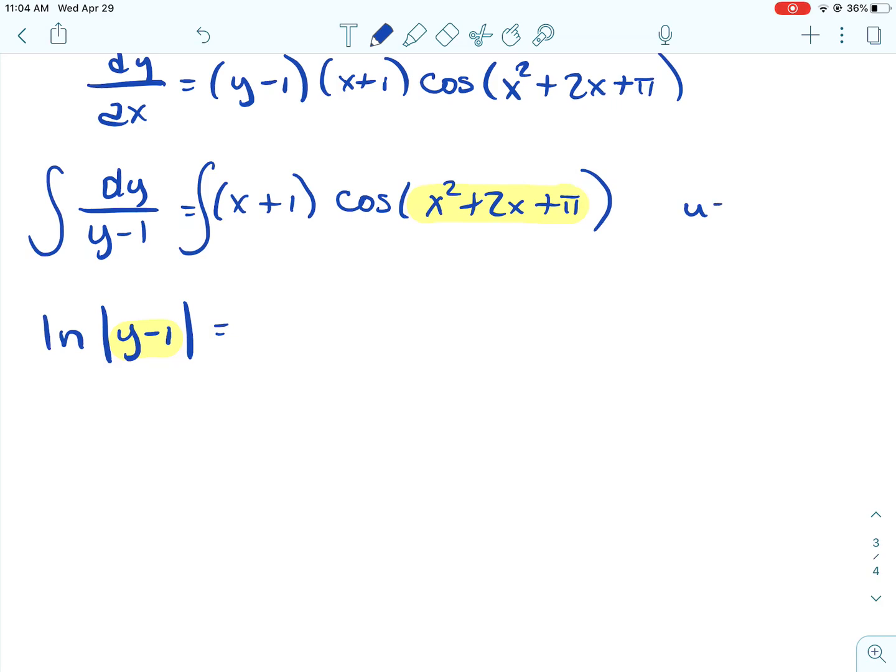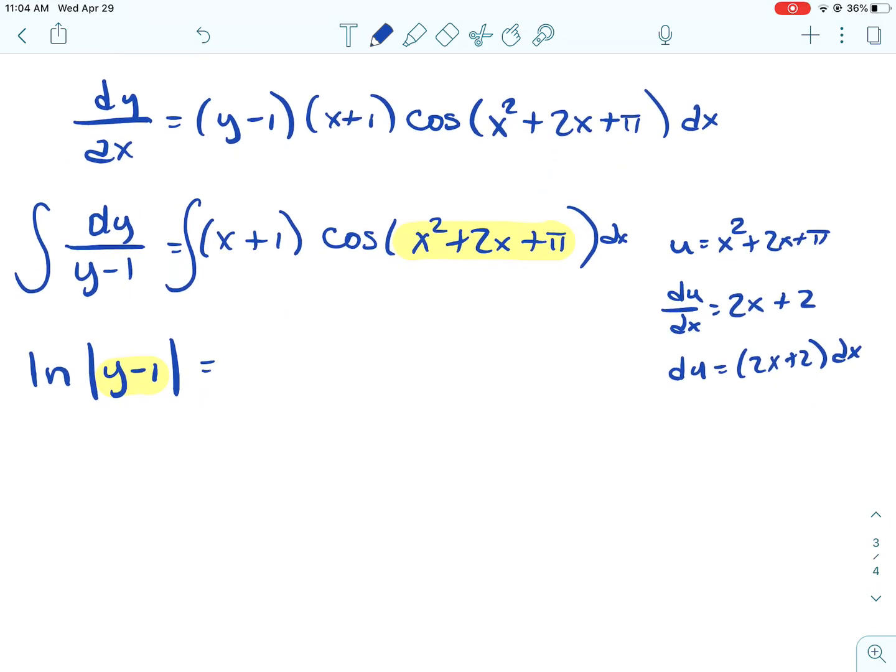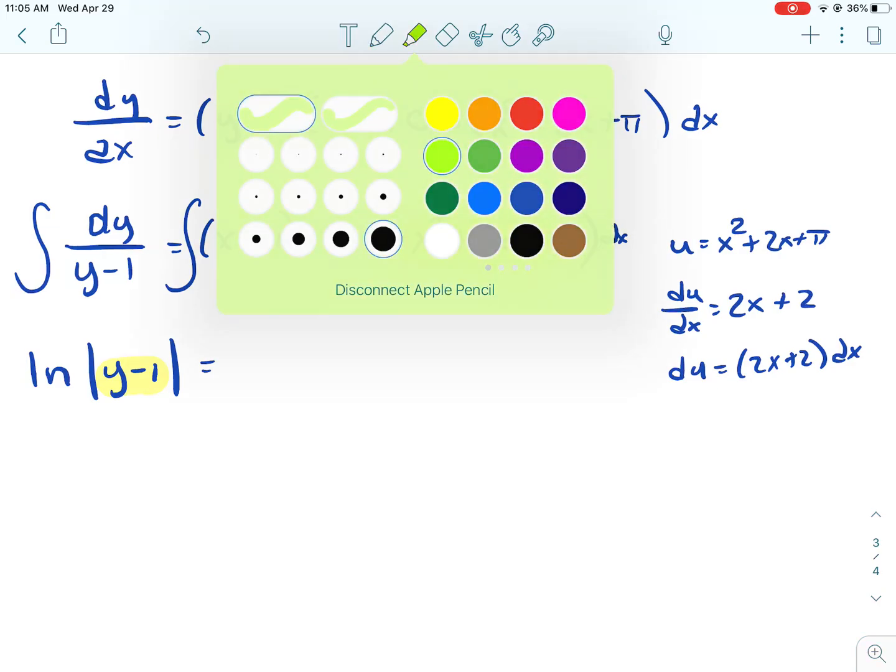The other side is kind of a big deal, but not too bad. So I'm hoping when you look at this, you can kind of recognize that there's some u-substitution that's needed. And then I really hope you recognize that this is the inside function. So u is going to be x² + 2x + π. And then I need to find the derivative of that, which is 2x + 2.